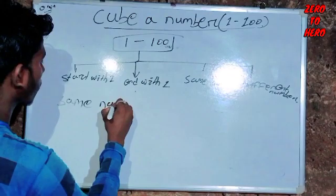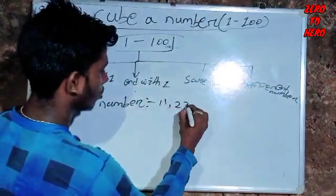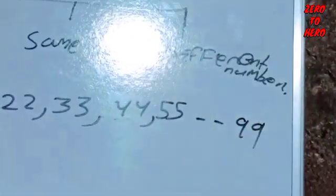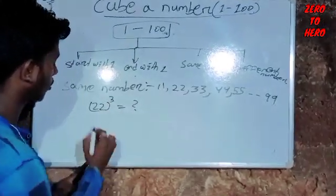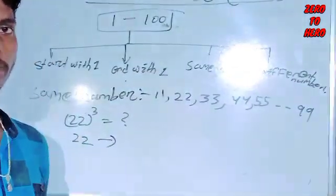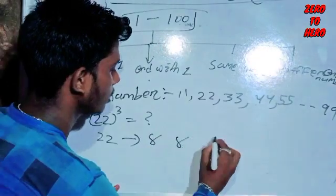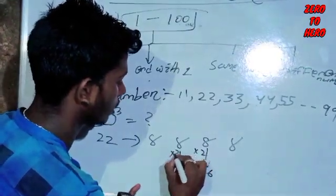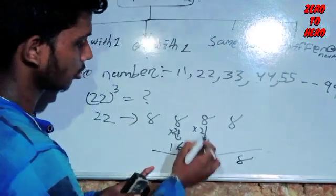Same digit numbers: 11, 22, 33, 44, 55, up to 99. For 22: same digit number. The digit is 2 — 2 cubed is 8. Working through: 1 plus 8 is 6, and the result follows.